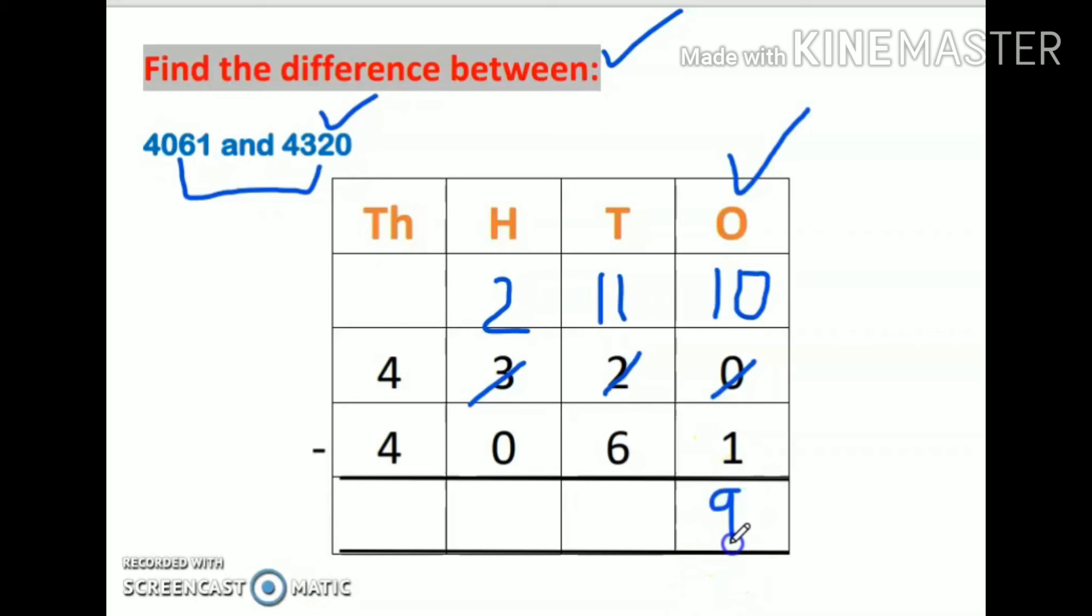This is according to properties of subtraction. When one is subtracted from any number, the answer is the number which is predecessor of this number. Now 11 minus 6 is 5.